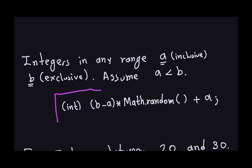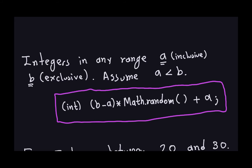The line of code is: (int)(Math.random() * (B - A) + A). You take Math.random(), multiply it by (B - A), then add A. That ensures the result is between A and B. Casting to an integer then gives you an integer in that range. A and B are assumed to be integers with A strictly less than B.